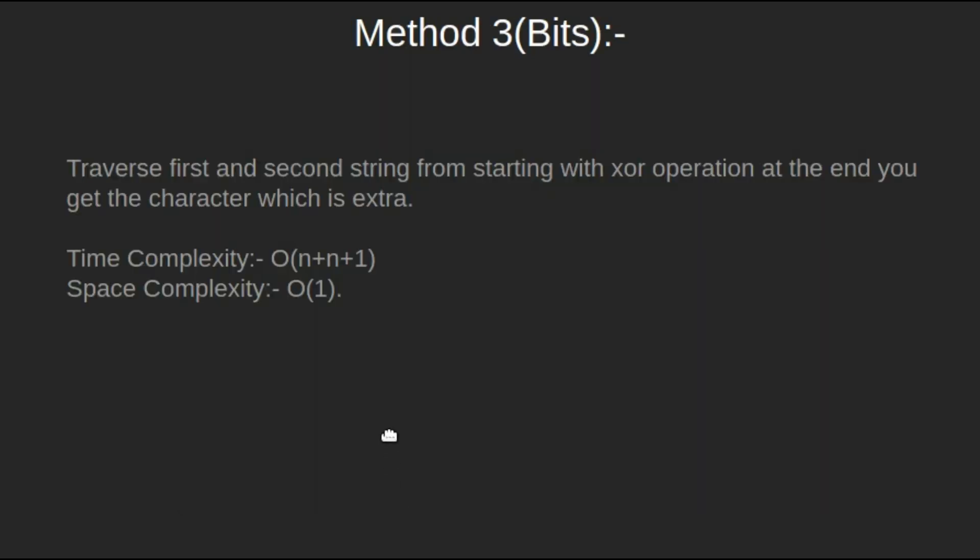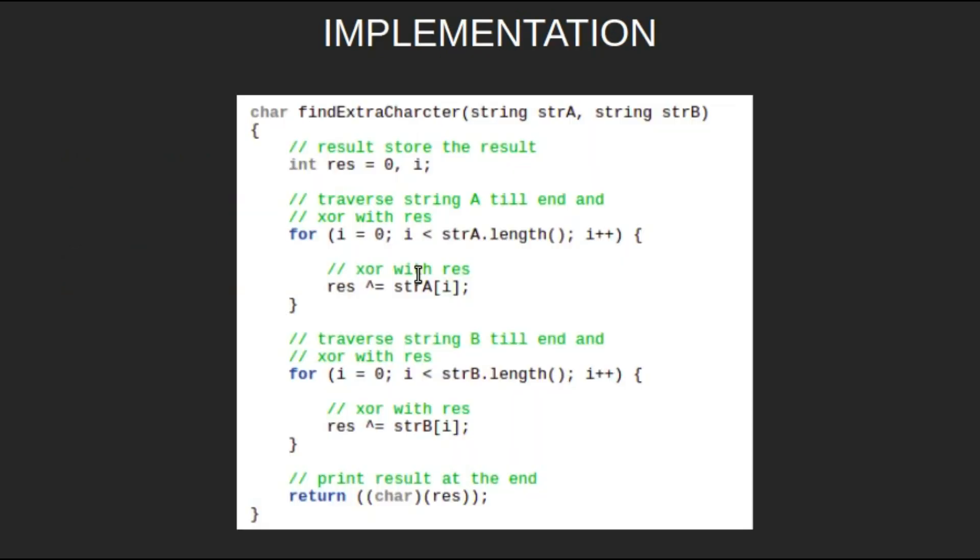Third method is to use XOR operation. Traverse first and second string from the starting with XOR operation. At the end we will get the character which is extra. The time complexity will be O of n because we will traverse our string twice. The space complexity will be constant.